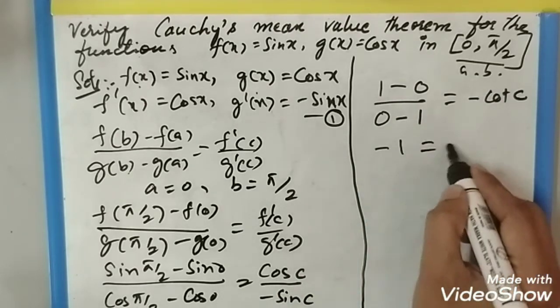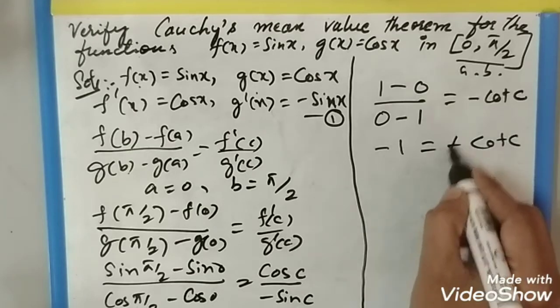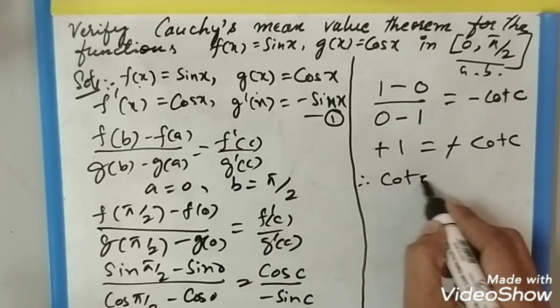-1 = -cot c. Minus and minus cancel, therefore cot c is equal to 1.